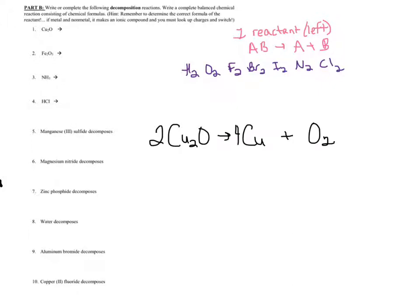For decomposition example three — NH₃ — I'm breaking it down into its constituent elements. Nitrogen by itself is diatomic: N₂. Hydrogen by itself is also diatomic: H₂. From there, it's just balancing.